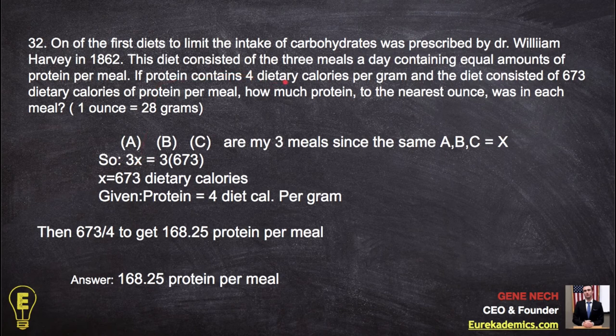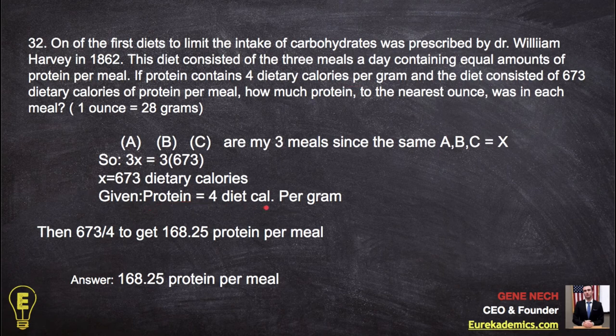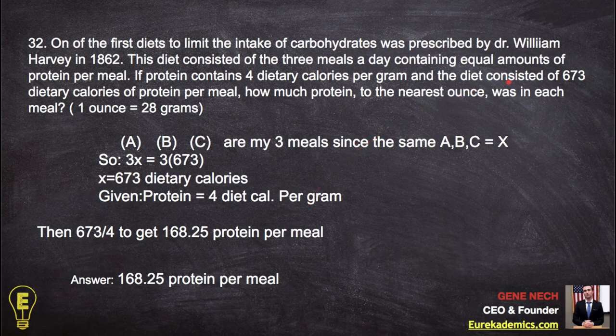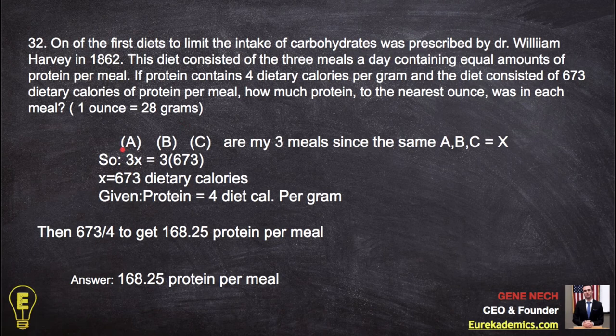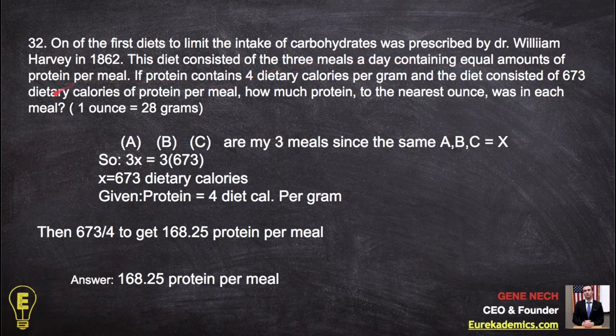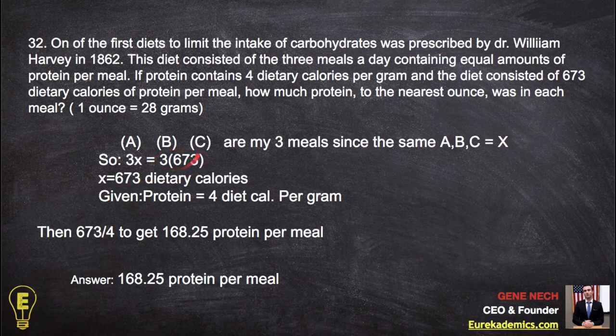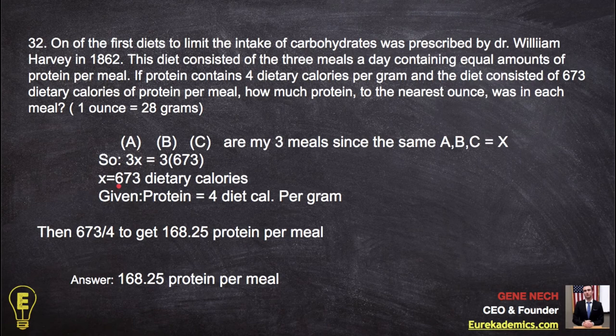Now, if protein contains four dietary calories per gram, there it is. Protein equals four dietary calories per gram. You've got to write these things down as math, like data things that you can use. Consisted of 673 dietary calories per protein meal. How much protein to the nearest ounce was in each meal? So we have three meals. We have 3x has to equal three times 673 because it consisted of 673 dietary calories per meal. So this number gives us dietary calories per meal. Solve for x. X is 673 dietary calories.